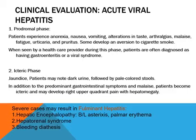Later, the patient develops jaundice and starts passing dark-colored urine; there may also be pale-colored stools. Gastrointestinal symptoms and malaise are present, and patients usually develop anorexia. There is tenderness and pain in the abdomen, and vomiting and nausea are usually present in these patients.